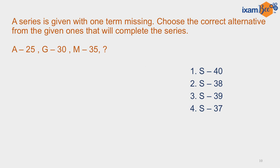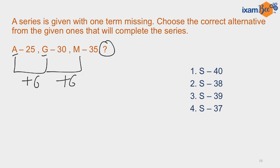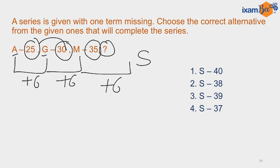An alphanumeric series is given and you have to find the missing term. Focusing on the first element, you add 6 to the place value of each previous letter to get the next: adding 6 to A gives G; adding 6 to G gives M; adding 6 to M gives S. For the numbers, these are multiples of 5, so 25, 30, 35 must be followed by 40. So S40 is the required answer, and option 1 is correct.